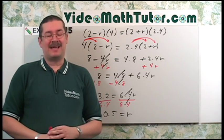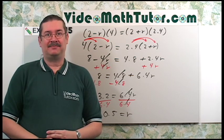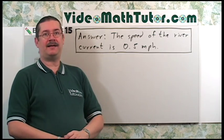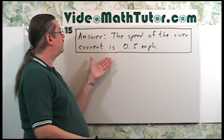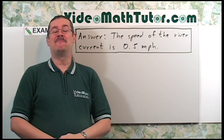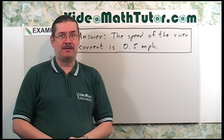Here's the formal answer. The speed of the river current is 0.5 miles per hour, or you can just say half a mile per hour.